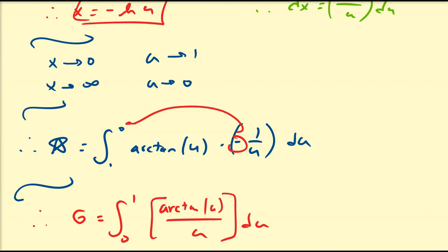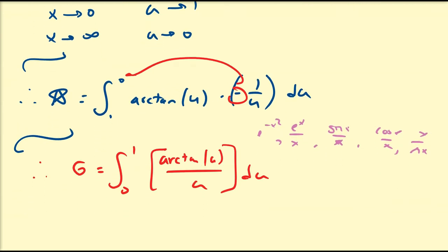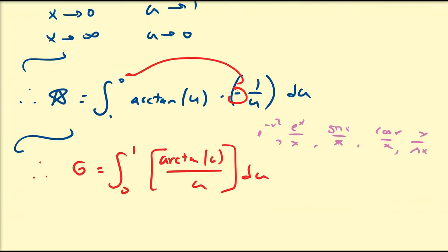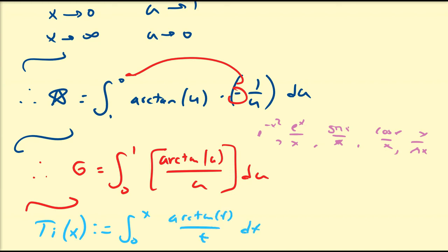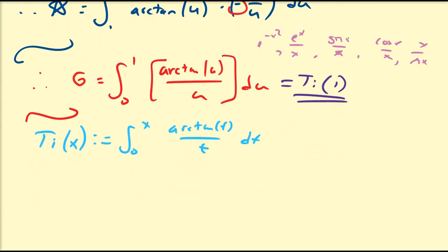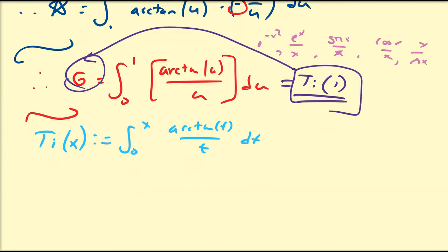Since we already know the original integral equals Catalan's constant, we get the identity G equals the integral from 0 to 1 of arctangent of u divided by u du. As we know, there are several non-elementary functions — sine x over x, cosine x over x, x divided by ln x, e to the x over x, e to the minus x squared — and arctangent of x over x is also a non-elementary primitive. This is actually defined to be the arctangent integral, or inverse tangent integral. We can define a new special function Ti of x as the integral from 0 to x of arctangent of t over t dt, and G equals Ti evaluated at 1.